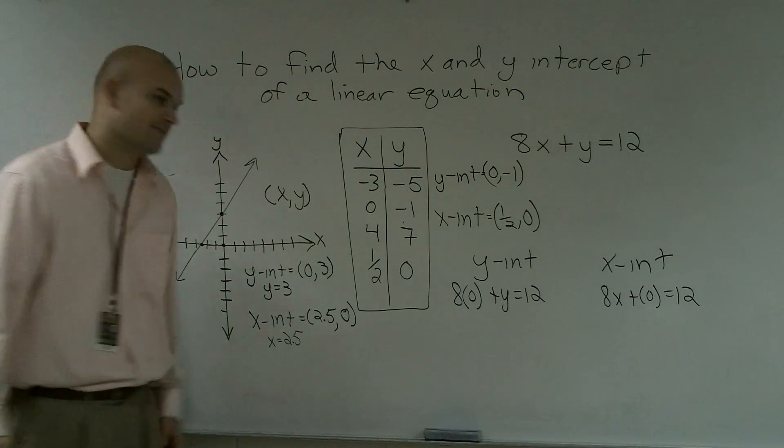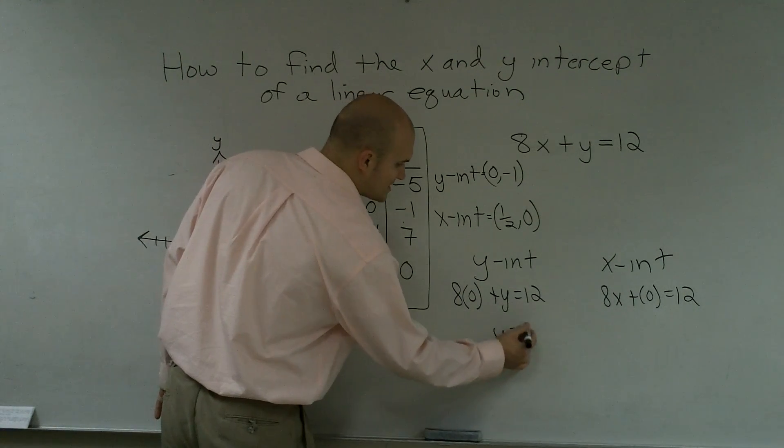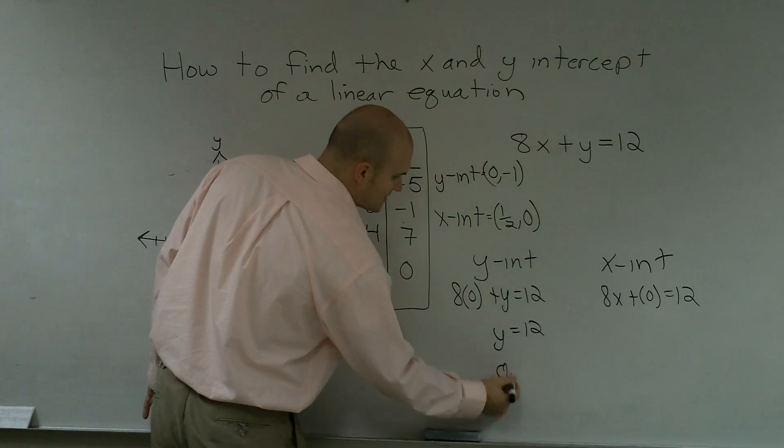So now, it's just simple math. 8 times 0 is obviously 0. y is equal to 12. The coordinate point would be 0 comma 12.